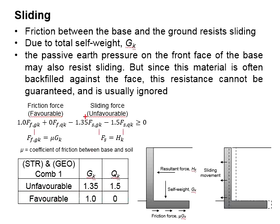For unfavorable forces, 1.35 is for Gk and 1.5 is for Qk.